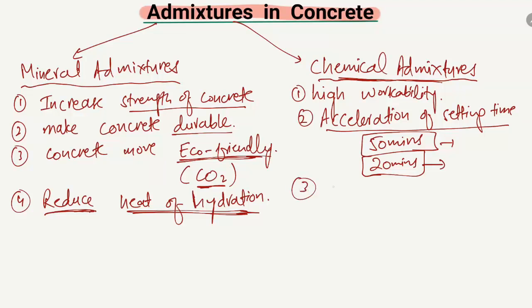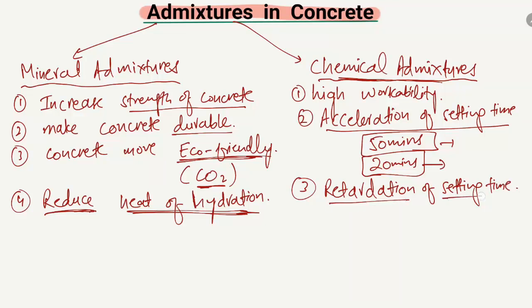There are also some admixtures that are used to retard or decelerate the setting time of concrete — they are known as retarding admixtures. By retardation I mean that it increases the setting time of concrete. For example, if the concrete was hardening in 30 minutes, it will now harden in 50 minutes. These are known as retarding chemical admixtures, and their purpose is the retardation of the setting time.